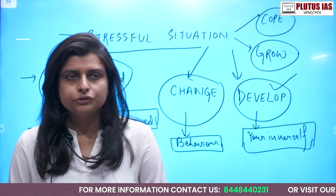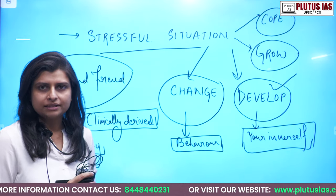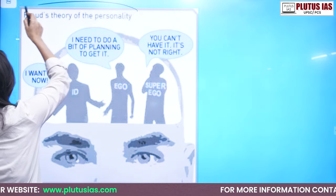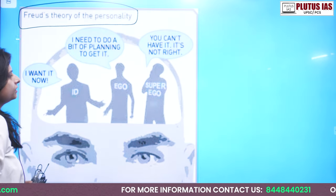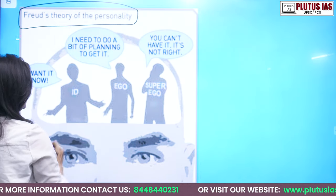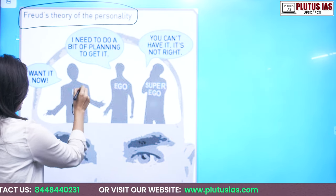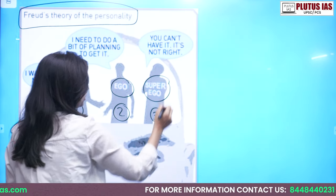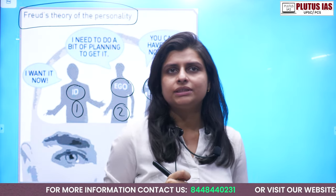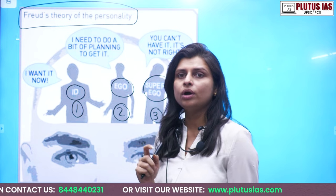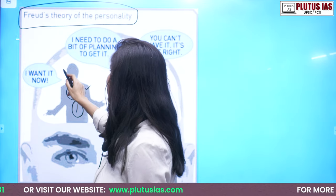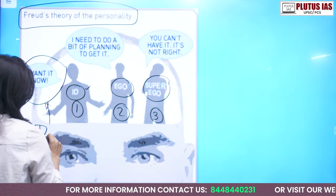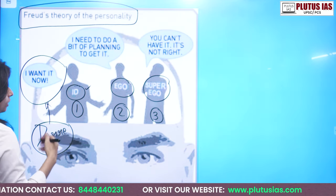Apart from this, what did Freud talk about in psychodynamic theory? Freud's theory of personality comprises three components. What are those three components? First is your ID. Second is ego. And third is super ego. The figure represents three human aspects. The first — ID — says 'I want it now.' This is a kind of desire, a desire to have something.